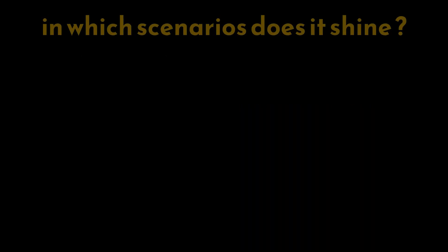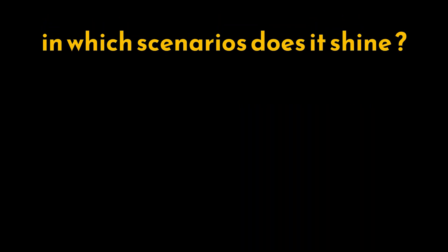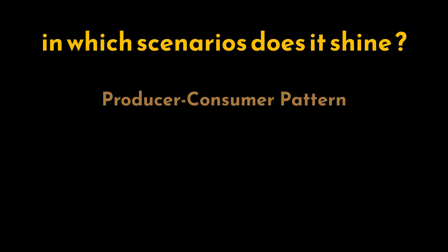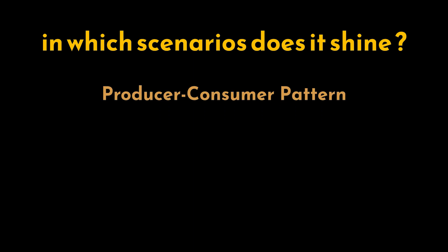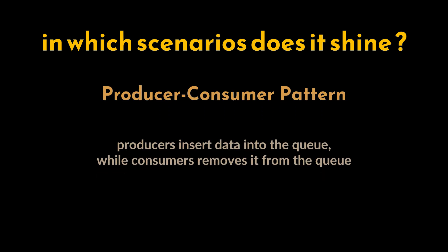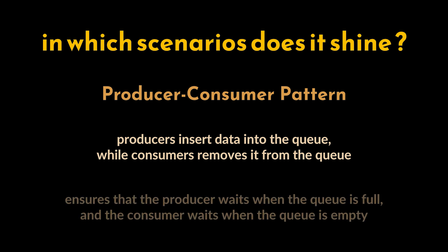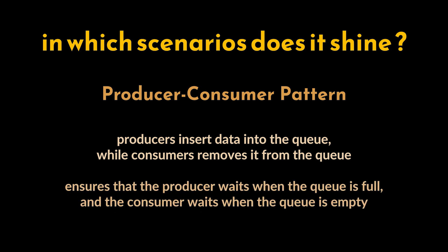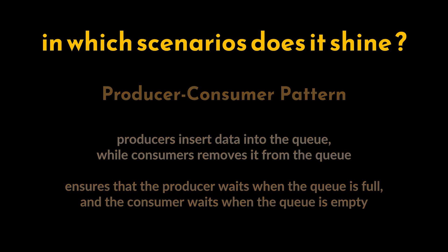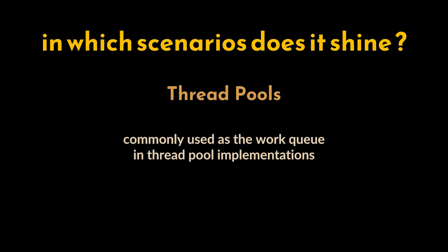After exploring the different implementations, one question remains: when should we use the BlockingQueue, and in which multi-threaded scenarios does it shine? One classic use case is the producer-consumer pattern — producers generate data and insert it into the queue while consumers process the data by removing it. The BlockingQueue ensures that the producer waits when the queue is full and the consumer waits when the queue is empty, maintaining a smooth flow of data between threads.